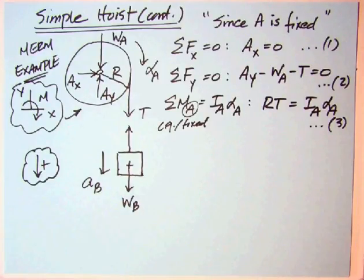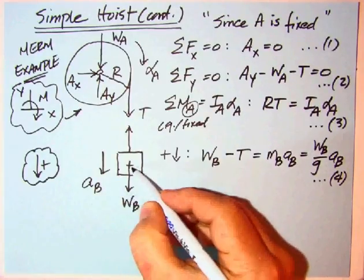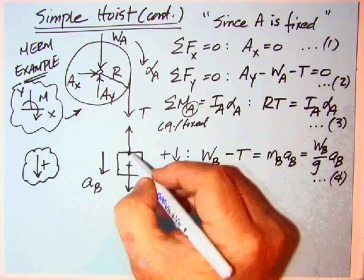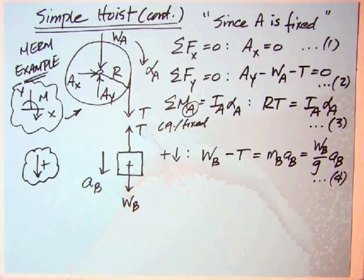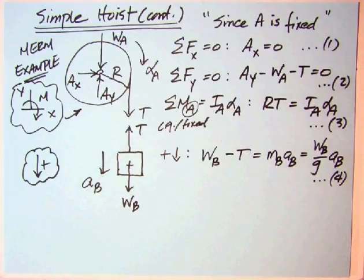What we've got left now is the block. Summing forces downward, we've got WB at the center of the block. T is, sorry I missed a T there, Newton's third law.